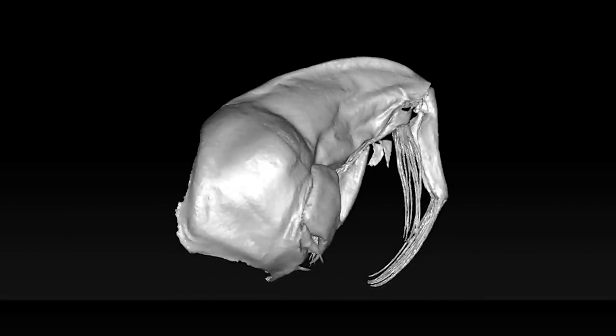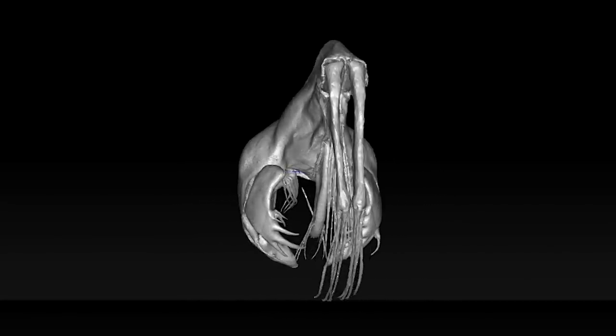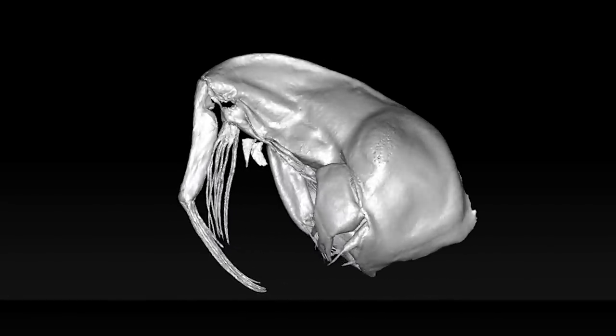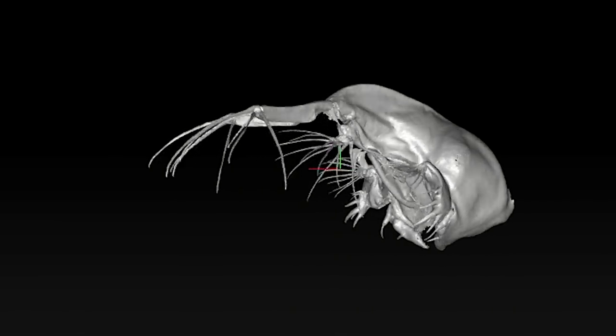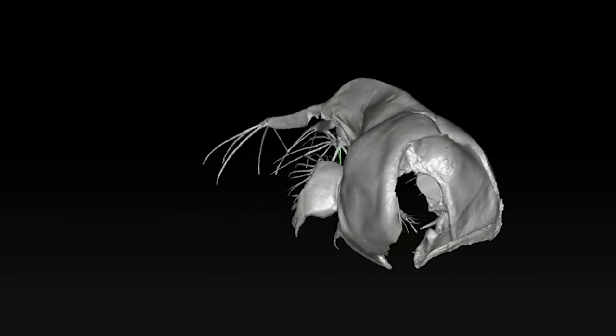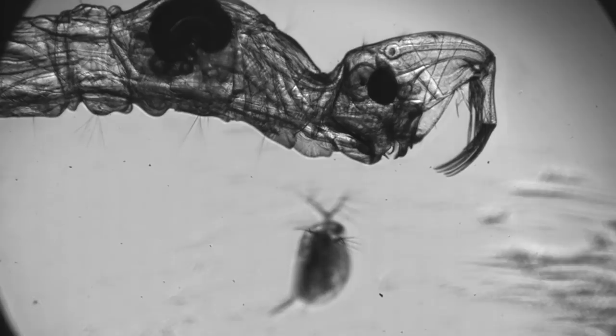These centimeter-long worms ambush their prey with long articulated bristles that rapidly unfurl into a catching basket. Recently, researchers discovered exactly how this capture mechanism works. They were using high-speed video to study the interactions between glass worms and one of its main prey items.